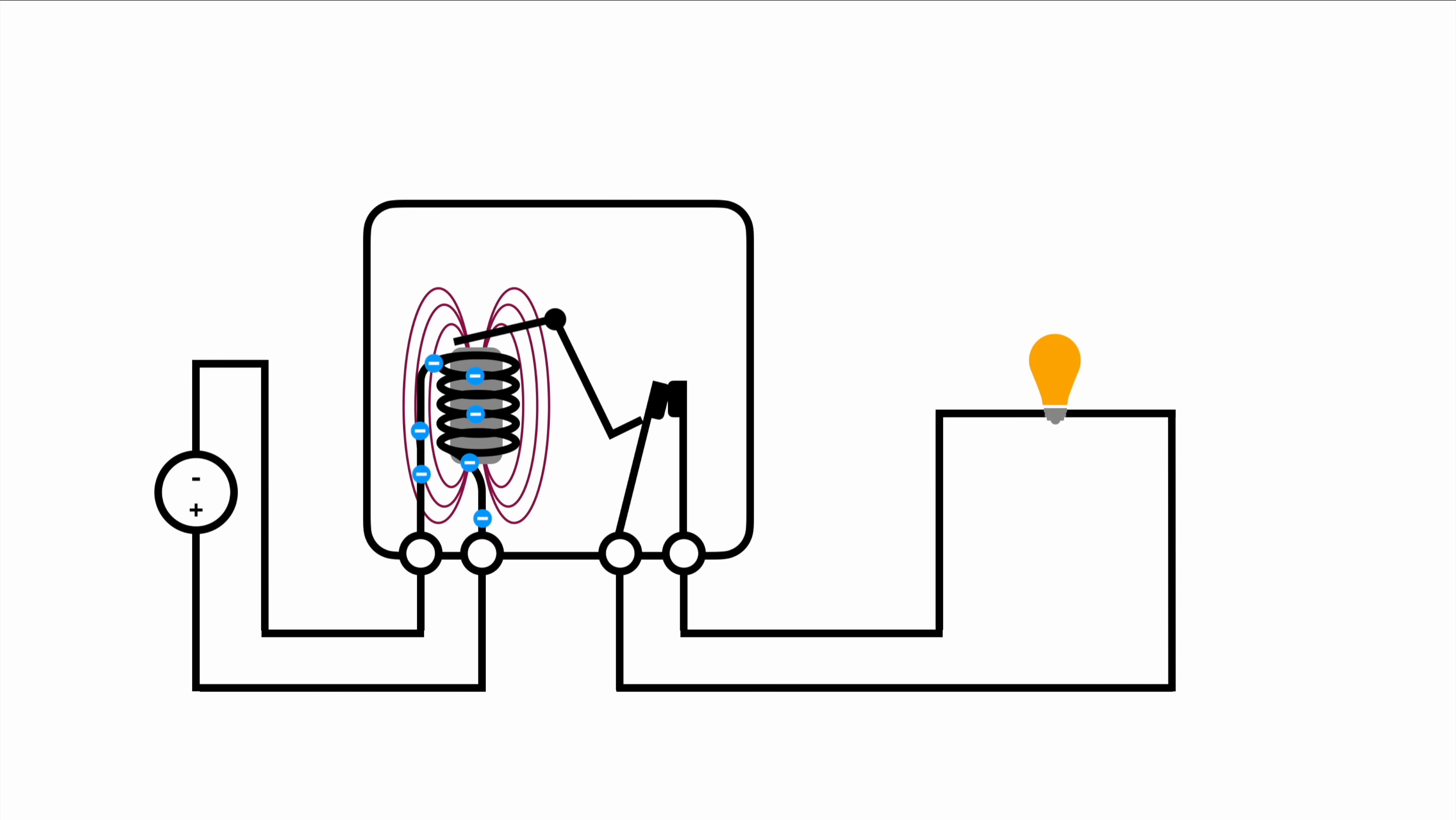To enable the relay to perform its task you need to apply this activation or engagement voltage on the left hand side. This voltage has obviously a certain threshold. In case you're not reaching the voltage required to switch or you're slightly below on your supply voltage here on the left hand side what will happen is that the magnetic field won't be strong enough.